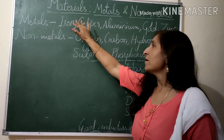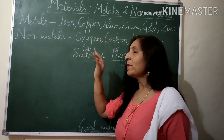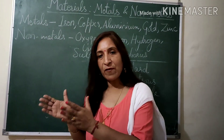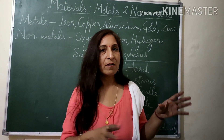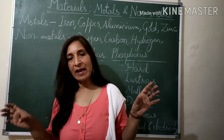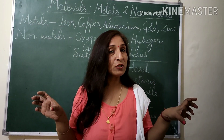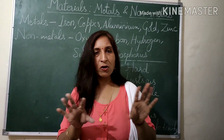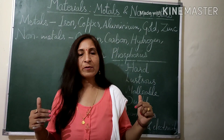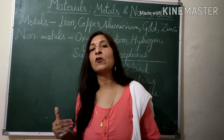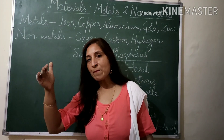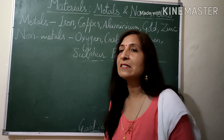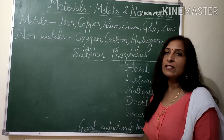Metals have high density and non-metals have low density. For example, if we take an equal-sized piece of iron and coal, the volume is the same but the mass of iron is more and the mass of coal is less. Since density is mass per unit volume, this makes it clear that the density of metals is higher than that of non-metals. These are the differences between metals and non-metals based on their physical properties.